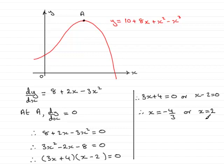So quite clearly, looking at the graph, x equaling minus 4 thirds must relate to a stationary point somewhere over here. But our A coordinate obviously has a positive x value, so therefore at A we can see that the x coordinate is clearly 2. And so that proves that part of the question.